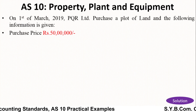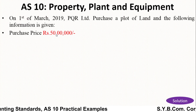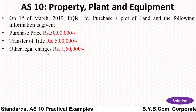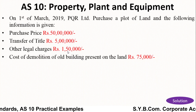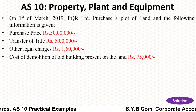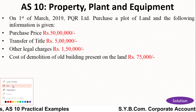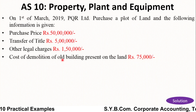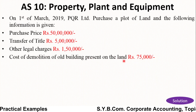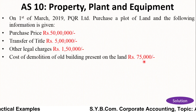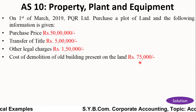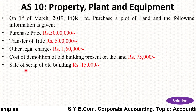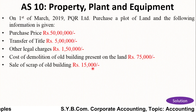Here is the example under Accounting Standard 10 — Property, Plant and Equipment. On 1st March 2019, PQR Limited purchased a plot of land. The following information is given: purchase price is rupees 50 lakh, transfer of title is rupees 5 lakh, other legal charges is rupees 1 lakh 50,000, and cost of demolition of the old building present on the land is rupees 75,000.